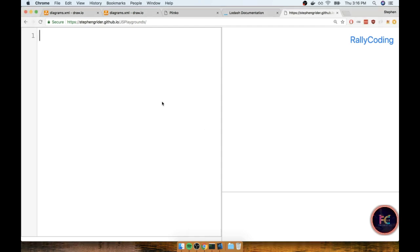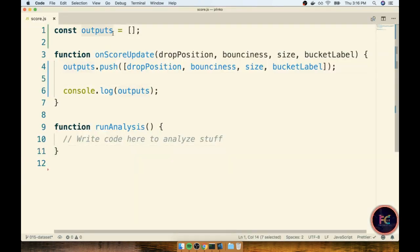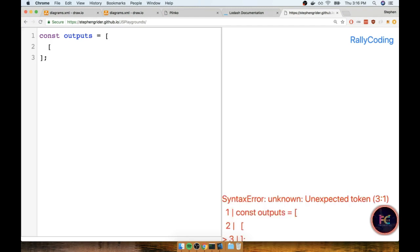The first thing I'm going to do is put together a bit of fake dummy data that we can work with. I'm going to make an array called outputs - I'm calling it outputs because that's what we had called our outputs array inside our real project. Inside here I'll put a couple of fake data records. Remember that the ball data recording has the drop position, ball bounciness, ball size, and then the bucket it fell into.